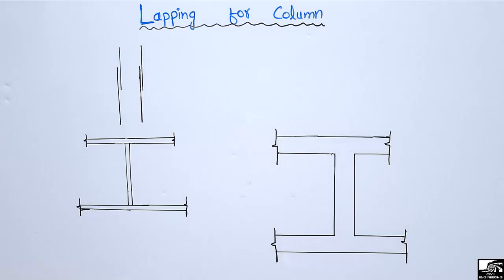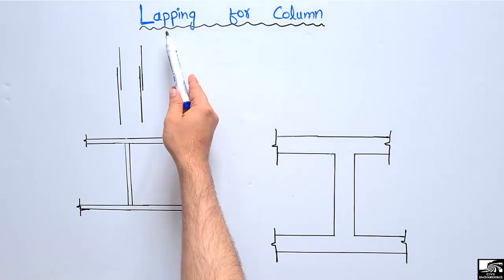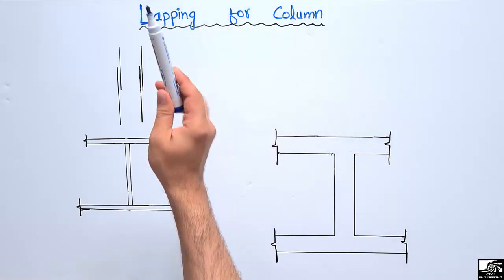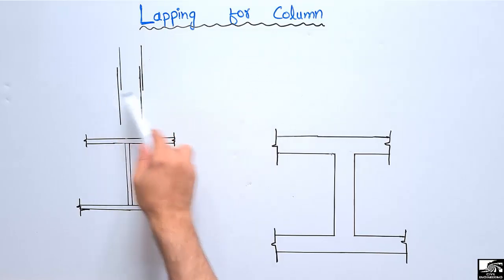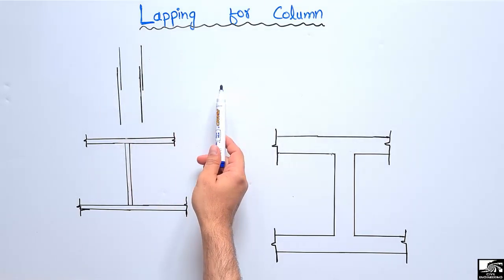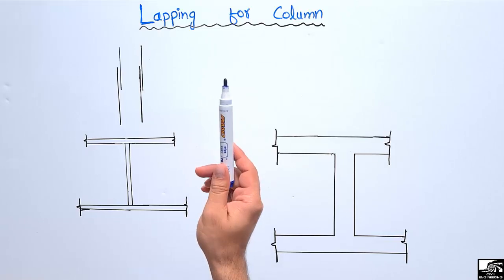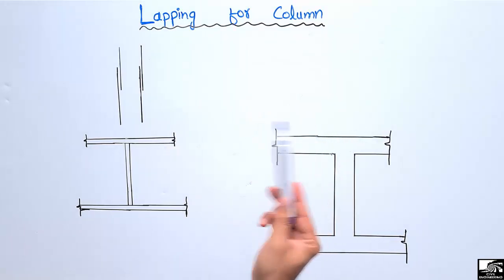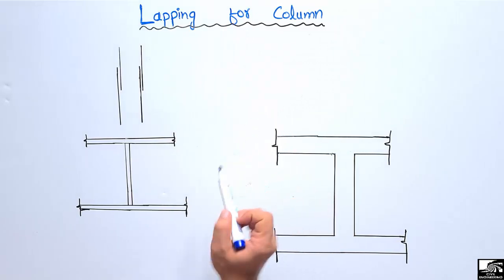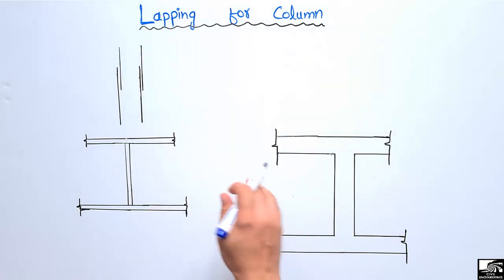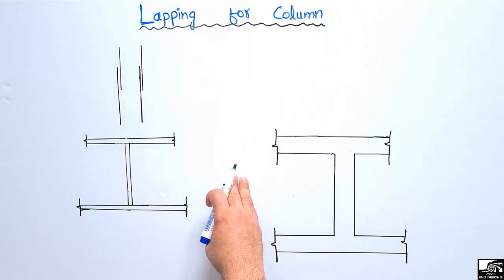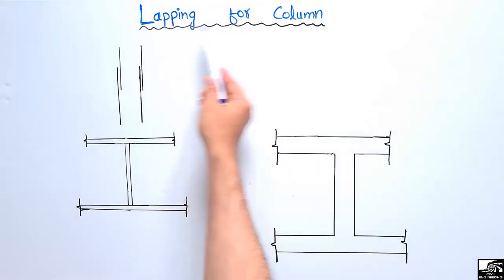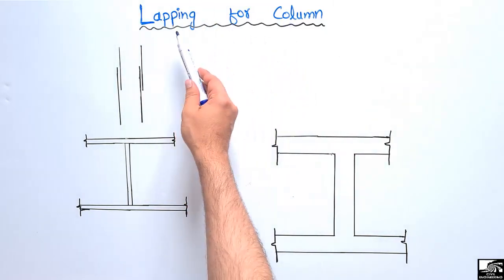Hello guys, welcome back to the 7 Engineering YouTube channel. Please subscribe to our channel for daily 7 Engineering videos. Today's lecture we are going to discuss lapping for the column — what is lapping, what is the lapping length for the column or for compression members, what will be the lapping zones for the column, and when we have to provide lapping and when we have to provide welding of the steel bars.